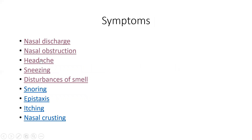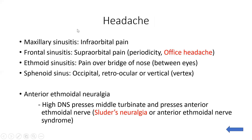Headache due to nasal pathology can be either because of paranasal sinus involvement, that is infection of the paranasal sinuses, or it can be neural. In maxillary sinusitis, the pain will be in the infraorbital region. In frontal sinusitis, the pain will be in the supraorbital region, and it has a characteristic periodicity — it starts in the morning, peaks at midday, and fades by evening. That is why it is also called office headache, as it occurs during office hours.